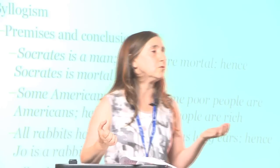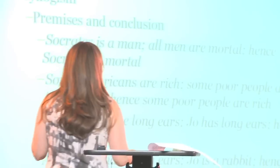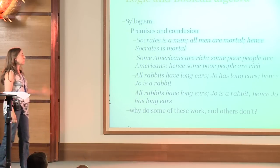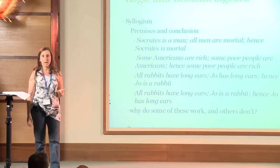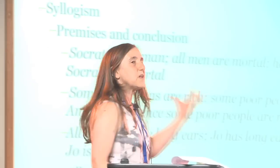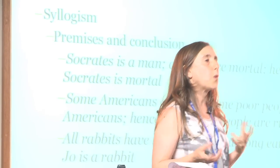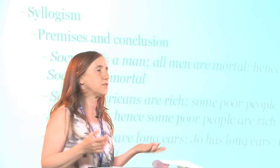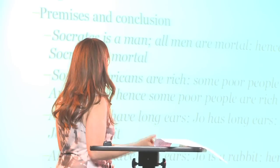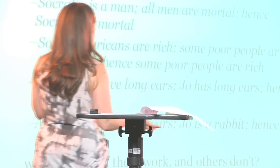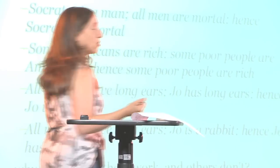We can construct other arguments. Here's another one: 'Some Americans are rich. Some poor people are American. Therefore, some poor people are rich.' These are simply formulating premises and a conclusion in the way the Greek philosophers would have done. Two more examples: 'All rabbits have long ears. Joe has long ears. Therefore, Joe is a rabbit.' And: 'All rabbits have long ears. Joe is a rabbit. Therefore, Joe has long ears.' What the Greeks were interested in was why do some of these work and some of them don't?